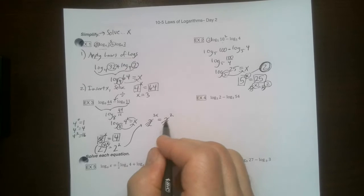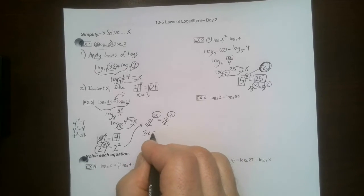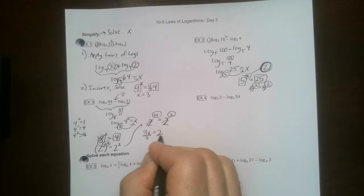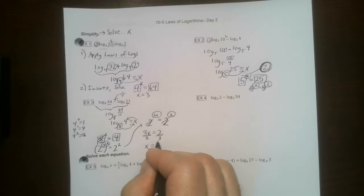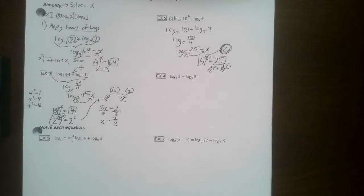So this whole thing is going to turn into 2 to the 3X equals 2 squared. My common bases disappear. So this stuff has to equal that stuff. And then I go, hey, I'm going to divide by 3. So I get X is 2 thirds. Okay, let's run to example 4.